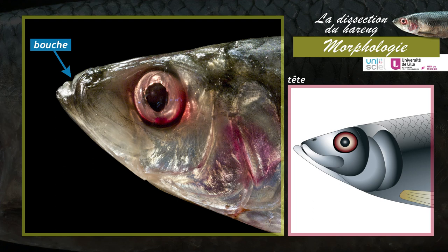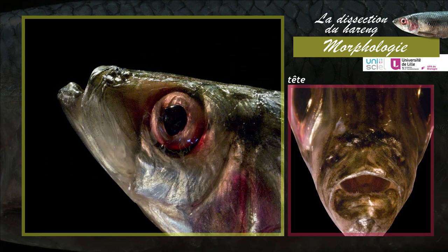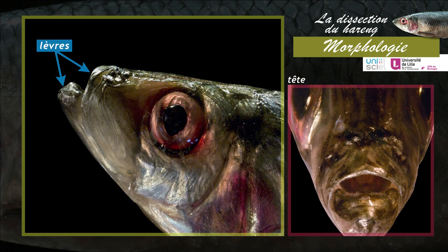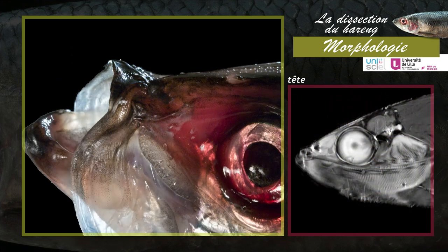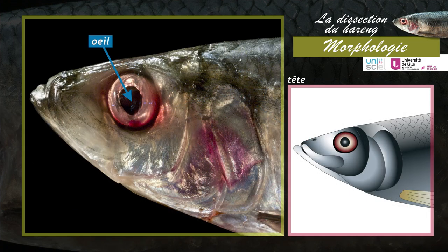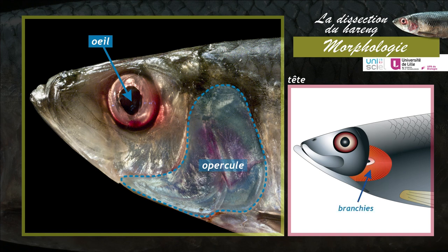La tête porte la bouche et les organes sensoriels : les narines et les yeux. La bouche est délimitée par des lèvres que soutiennent les mâchoires. Au-dessus de la bouche sont visibles les narines, qui chez les poissons ont un rôle exclusivement olfactif. Les yeux sont dépourvus de paupières. En arrière des yeux, en position latérale, sont présents les opercules, des plaques ossifiées qui masquent et protègent les branchies.